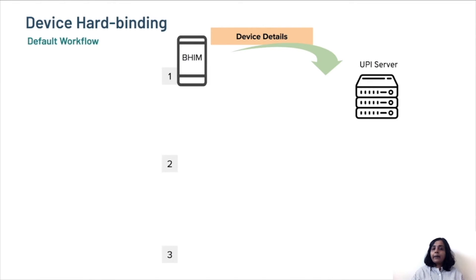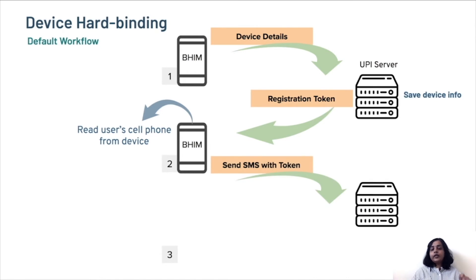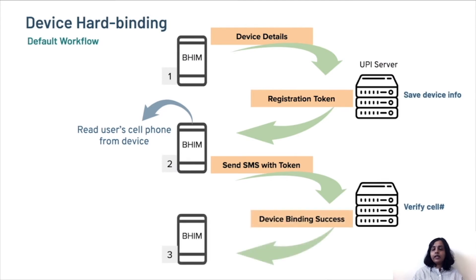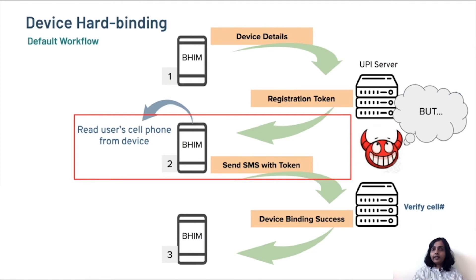In the first step, the Bheem app on the client's device grabs a user's device details and sends it to the UPI server. The UPI server saves this information and sends a registration token back to the client. In the second step, the Bheem app reads the user's cell phone number from the device automatically and sends an SMS containing the token to the UPI server. The UPI server receives the user's cell phone number or caller ID from that SMS, verifies the cell number, and binds it with the device information, then confirms the binding to the client. From an attacker's standpoint, step 2 of the protocol, which sends an SMS, is inherently more secure than a typical OTP-based verification, as the attacker would have to compromise the protections provided by the cell phone company. But the makers of UPI have provided an alternate workflow which has an inherent weakness.